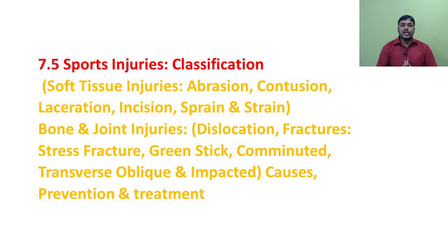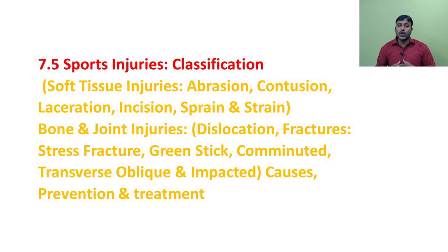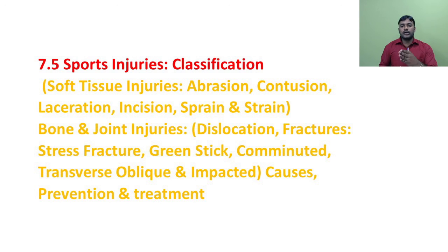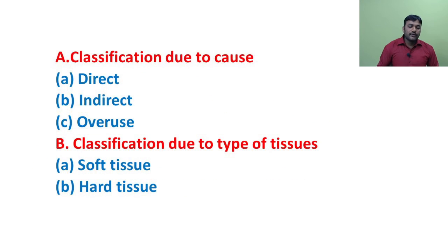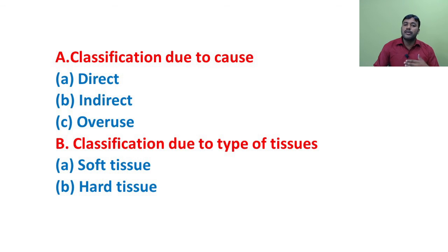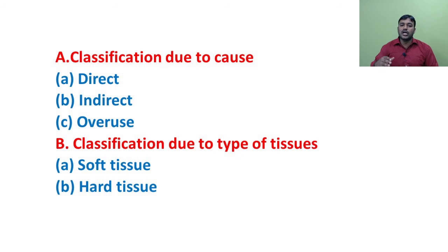Next, a very important topic: sports injuries. Sports injuries are very common in this competitive world, especially in contact sports. The classification of sports injuries is mainly based on causes and types of tissues. Sports injuries are mainly classified into two categories: classification due to cause, and classification due to type of tissues.